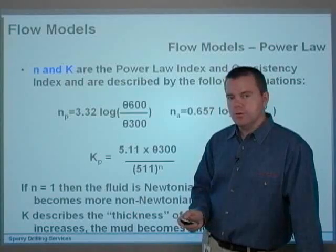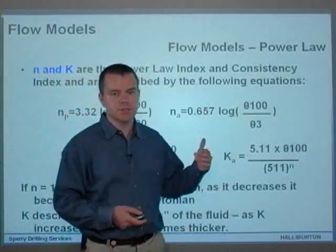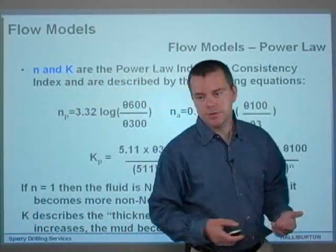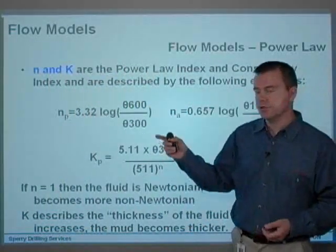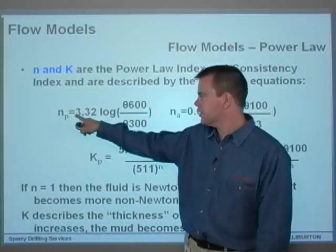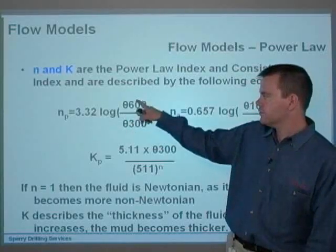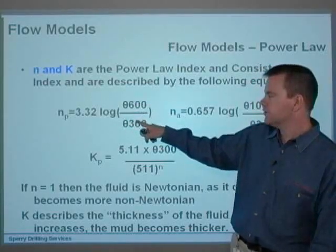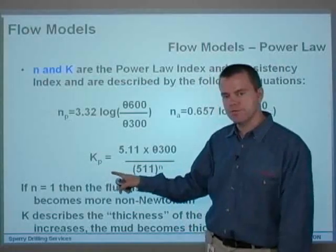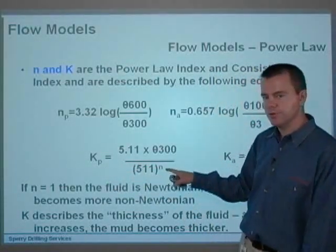Now, n and K in the Oswald-DeWaele power law are basically the power law index and the consistency index, and they're described by the following equations. n in pipe, n_p, equals 3.32 times the log of θ600 divided by θ300. And K in pipe is 5.11 times θ300 divided by 511 to the power of n.